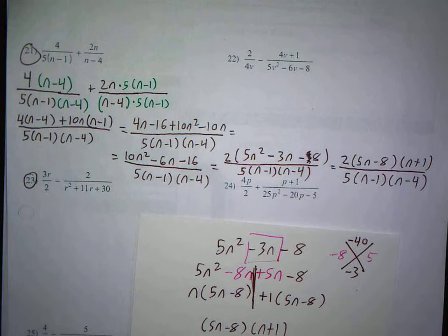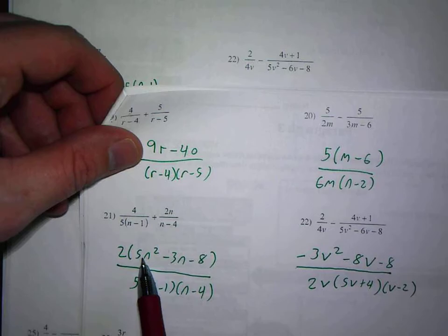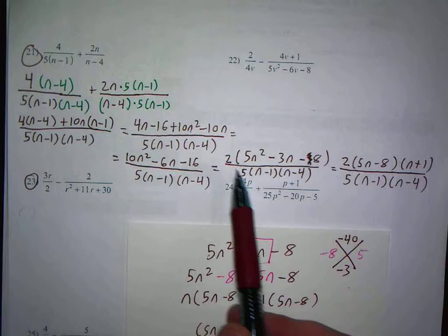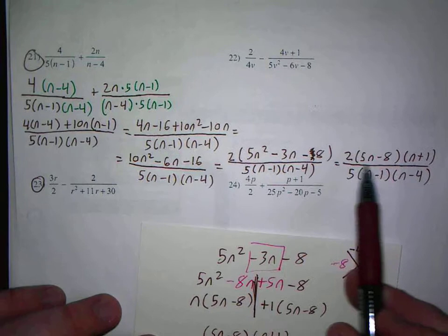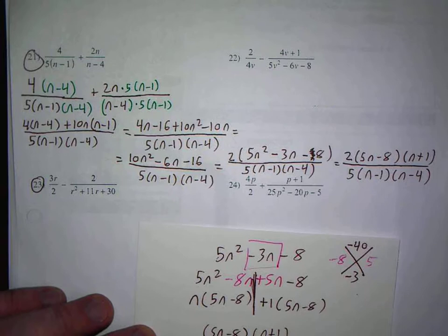Usually when you factor, things start canceling out, but in this case nothing did. Let's look at the answer for number 21 and check our work. Hey, 21. Notice they have a different answer: 5n squared minus 3n minus 8. So they stopped here, and the reason why they were able to stop there is because nothing factored or nothing canceled out. But I would prefer you go ahead and take it to that next step, because what if something did cancel?